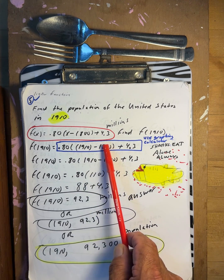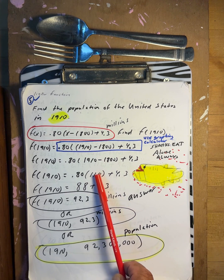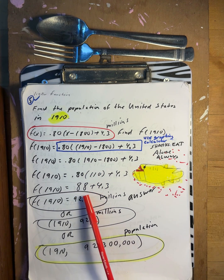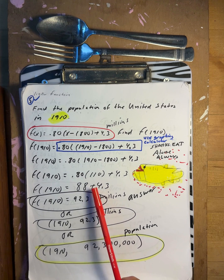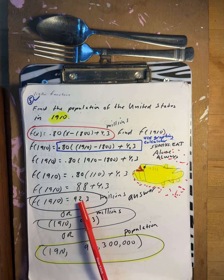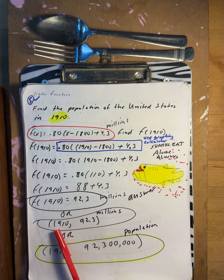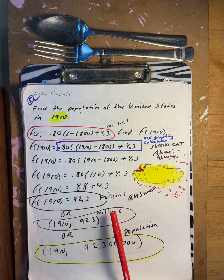f of 1910: this is in millions. Put it in — 1910 minus 1800 gives you 110. 110 times 0.80 gives you 88, plus 4.3 is 92.3 millions. So in 1910, the US population was 92.3 million.